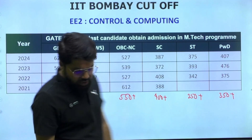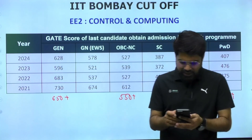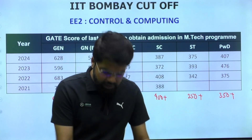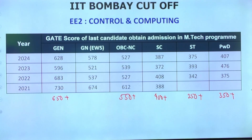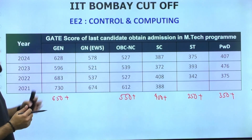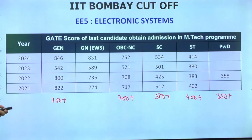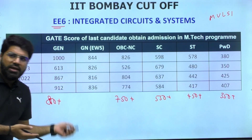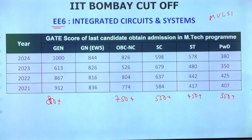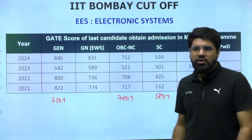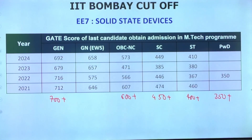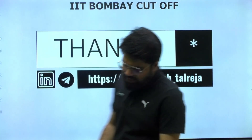Those are the six specializations under the Electrical Engineering department at IIT Bombay. The goal of this video was to present the last four years of cutoff data clearly. You can take a screenshot or note down the cutoffs for each specialization. I've also discussed the recommended preference order for filling up the form.